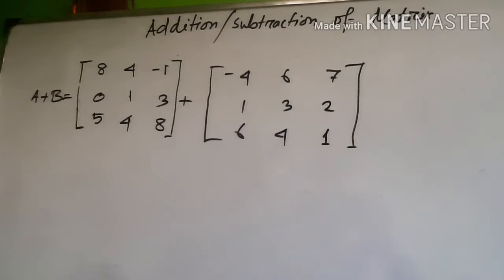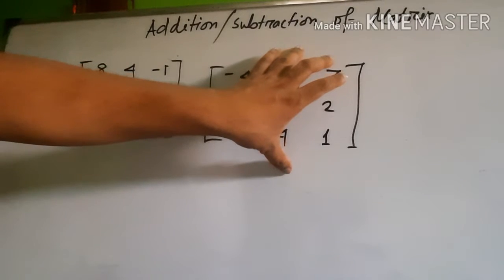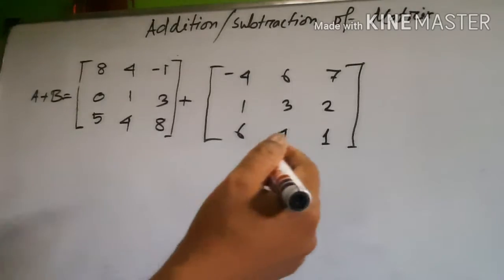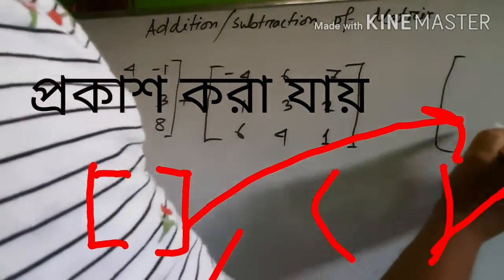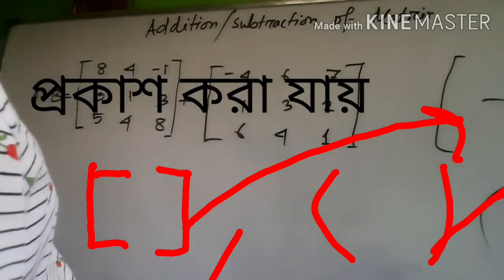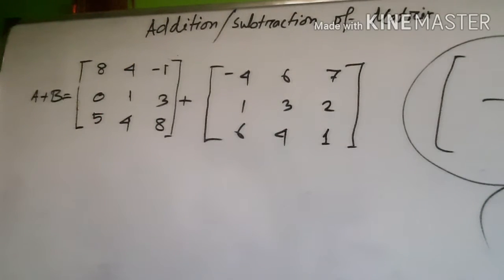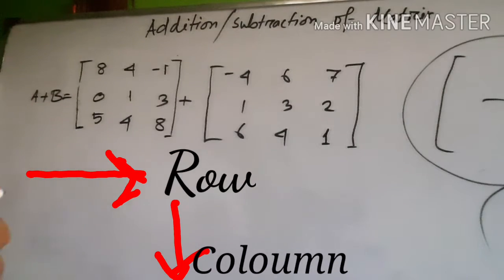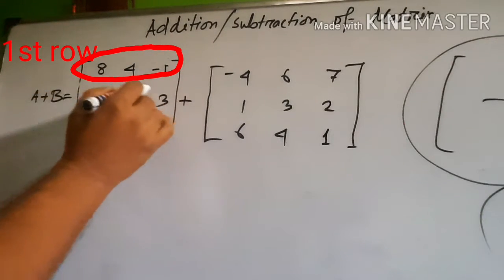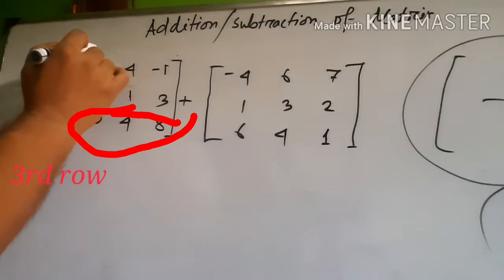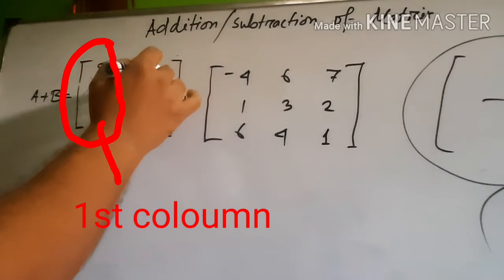Friends, I wrote the value of A and the value of B. This is noted by matrix. We know that a matrix is made of rows and columns. This is the first row, this is the second row, and this is the third row. And this is the first column, this is the second column, and this is the third column.